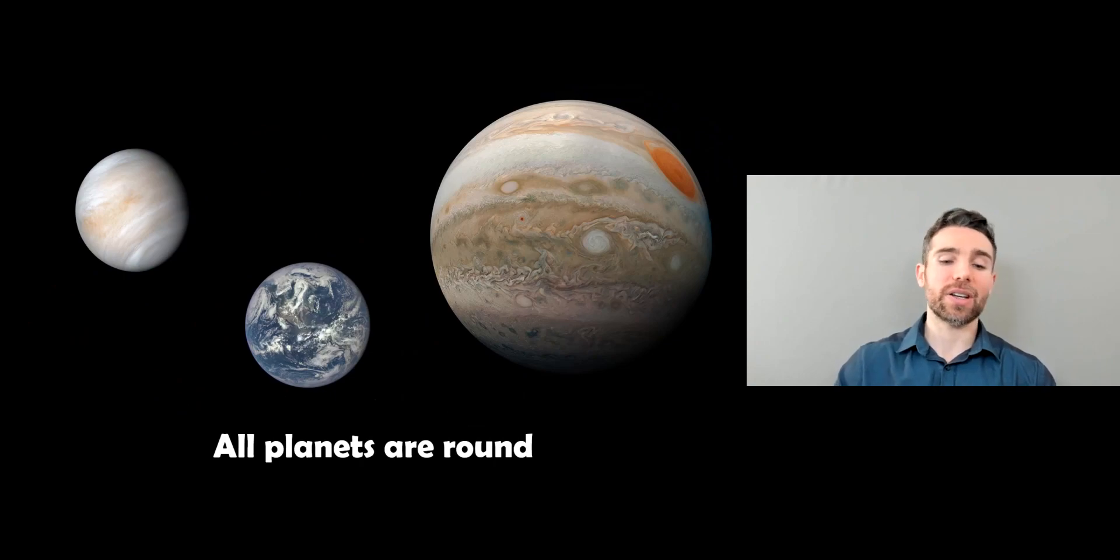When we have a look into the sky we can see that all planets are round. All of our planets in our solar system are round. So you've got Earth there, Jupiter, Venus, they're all pretty much round or very close to being a sphere in shape.